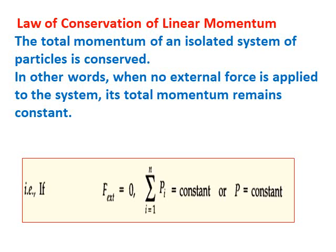The total linear momentum is the vector sum of linear momenta of all the particles of the system. Mathematically, if f external is 0, then the summation of pi where i stands from 1 to n is constant. Or you can simply write p is constant.